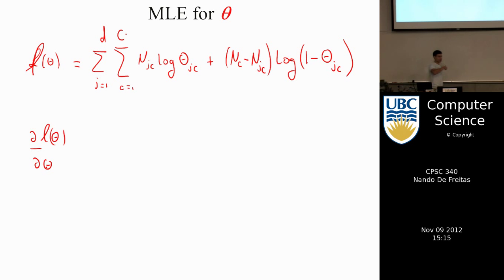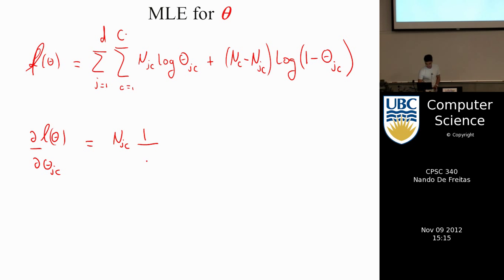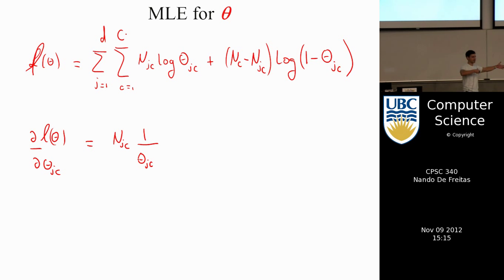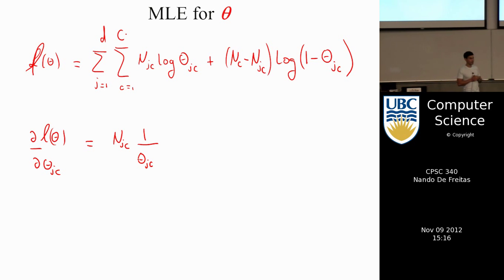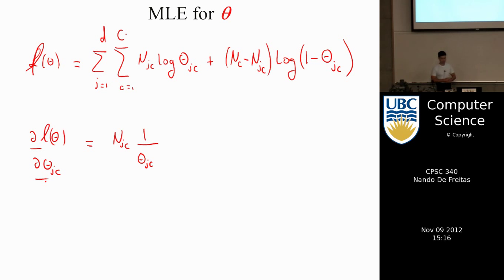I'm learning each coin separately, taking the derivative for coin jc. All other terms in the sum for different j's and c's will have derivative zero. For example, if c is 2, the derivative with respect to θ_jc when c is 1 will be zero because it's a different variable — it's constant with respect to θ_jc.